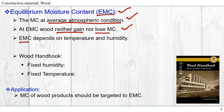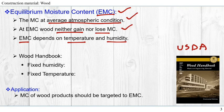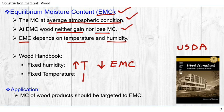The EMC depends on temperature and humidity. The Wood Handbook provided by the USDA (U.S. Department of Agriculture) says that for a fixed humidity, increasing the temperature will reduce the equilibrium moisture content. On the other hand, for a fixed temperature, if we increase the humidity, our EMC will increase.